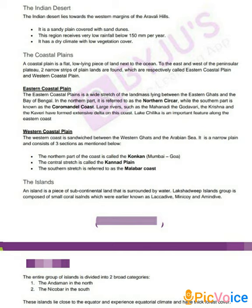On the east side we have the eastern coastal plain, which is a wide stretch of land lying between the Eastern Ghats and the Bay of Bengal. In the northern part it is referred to as Northern Sarkar, while the southern part is known as the Coromandel Coast. Large rivers such as Mahanadi, Godavari, Krishna, and Kaveri have formed extensive deltas on this coast. Chilka Lake is an important feature along the eastern coast. All rivers subsiding into the Bay of Bengal form deltas near the coastal plain.